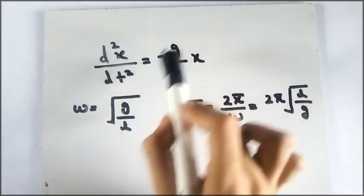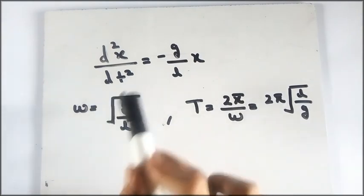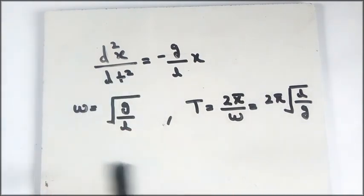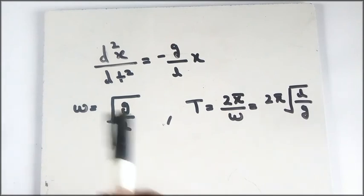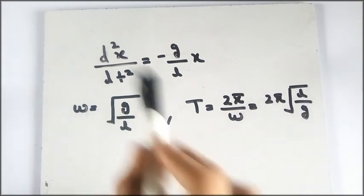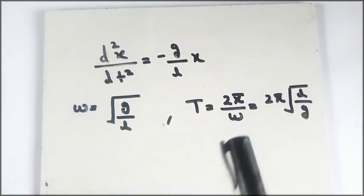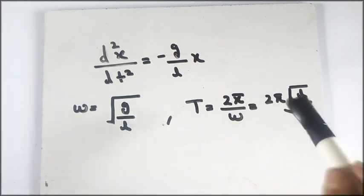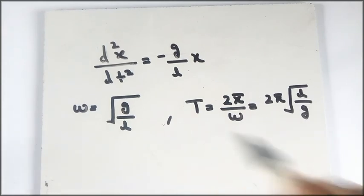From the equation of motion of the simple pendulum, the square root of the coefficient ratio gives us the angular frequency: ω = √(g/l). From this we can get the time period: T = 2π/ω = 2π√(l/g).